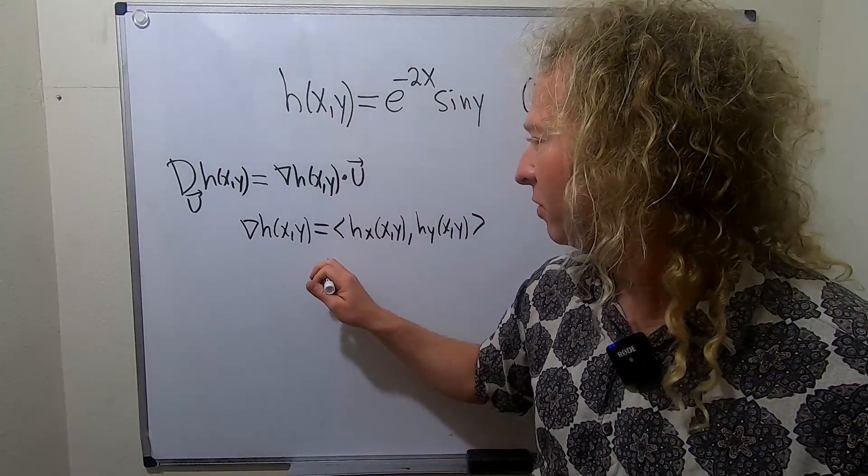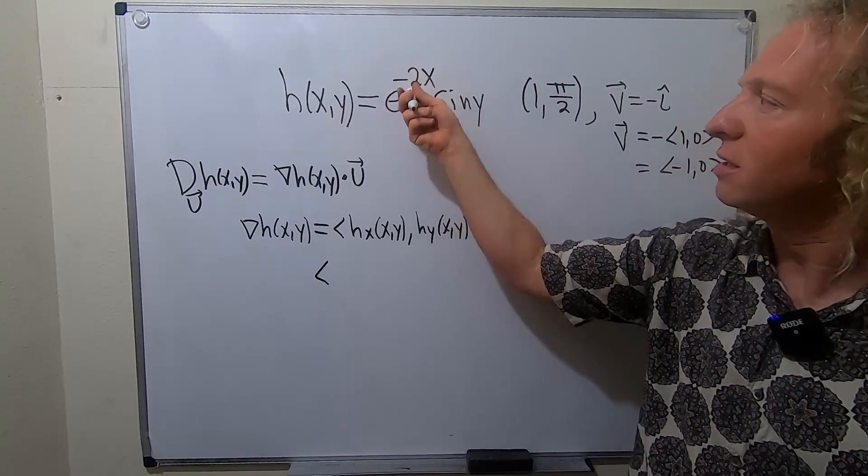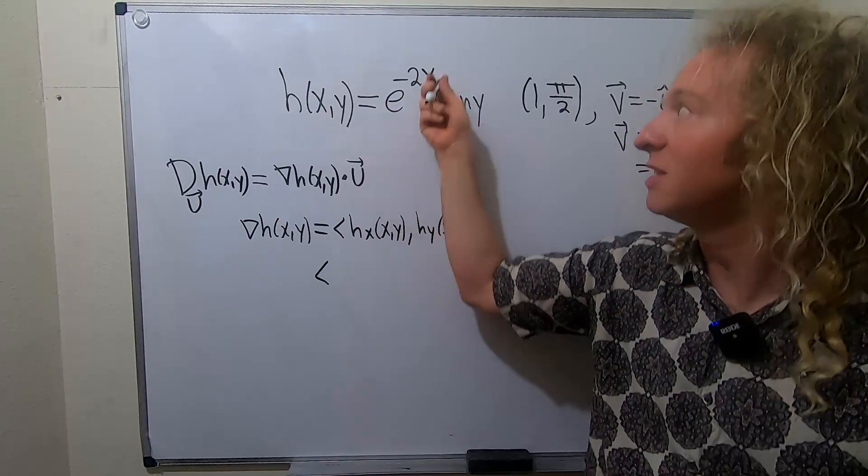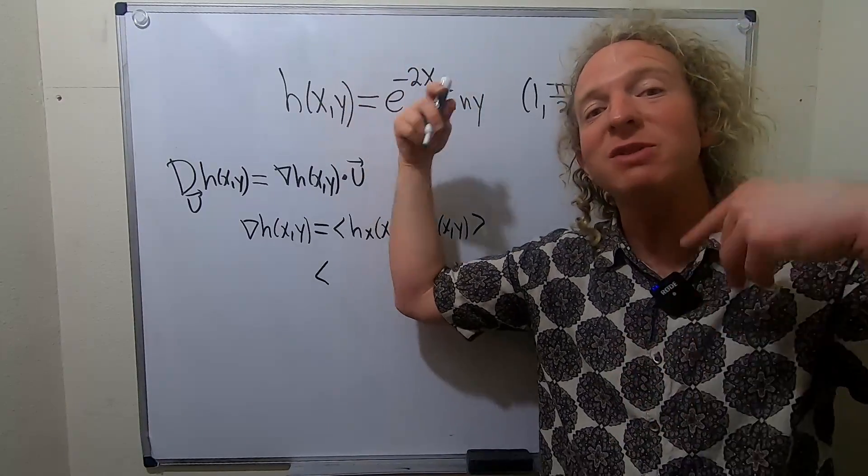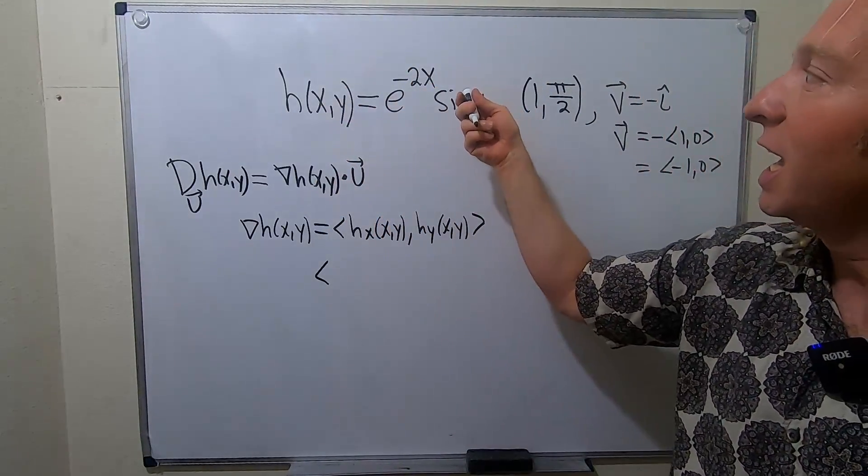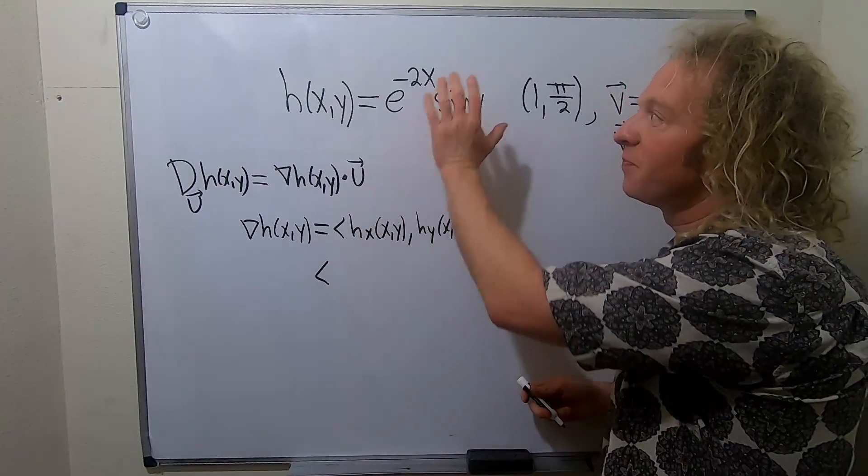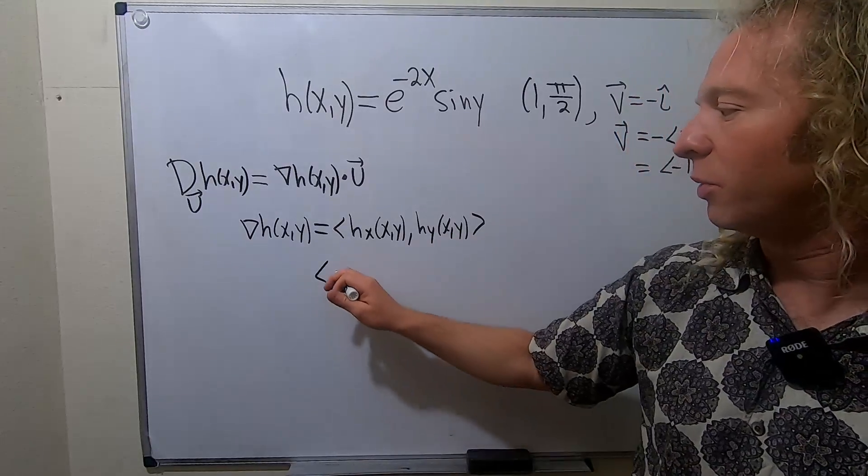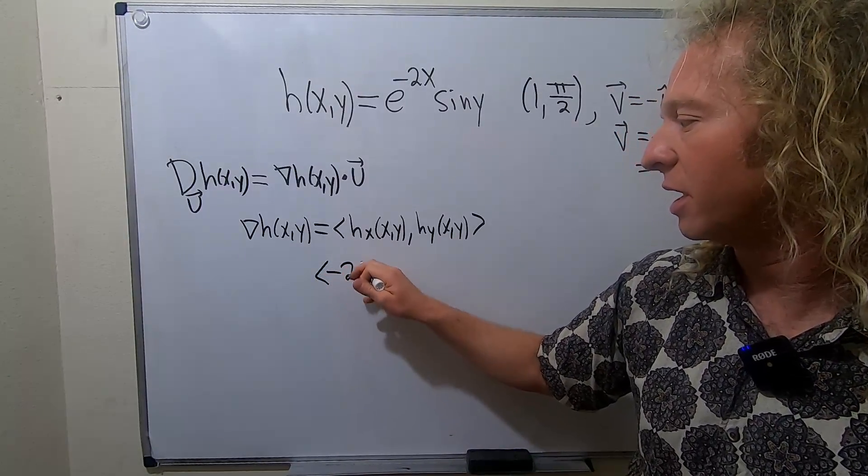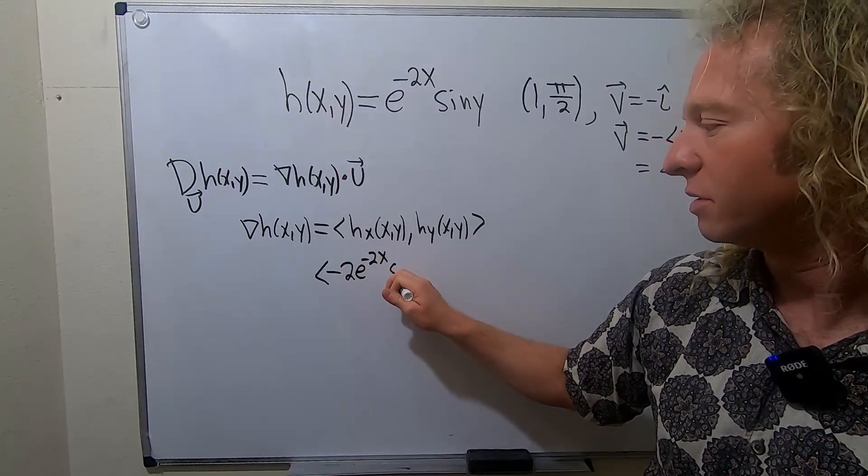So let's find hx. The derivative of e to the x is e to the x. So here it's e to the negative 2x times negative 2. It's the chain rule. And the sine is a constant because we're finding the partial with respect to x. So we treat this as a constant. So we're simply going to get negative 2 e to the negative 2x sine y.